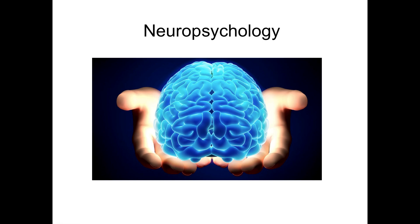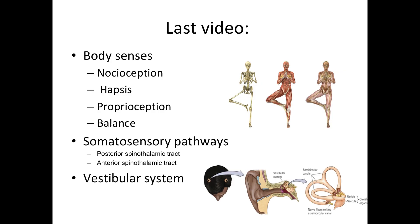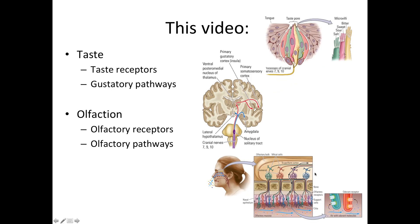Hello everyone and welcome back to neuropsychology. In the last video we talked about our somatosensory system — the body senses and all the submodalities: nociception, hapsis, proprioception, and balance. We also talked about the pathways in the brain: two spinal thalamic tracts, one posterior and one anterior. We also talked about the vestibular system located in the inner ear. The semicircular canals are not used in the auditory system at all. This will be the last video about the sensory systems.